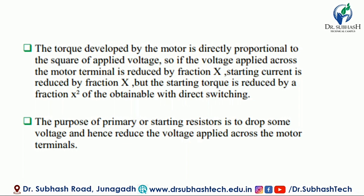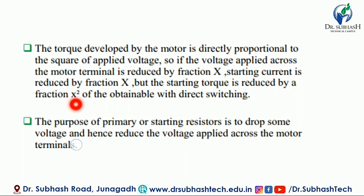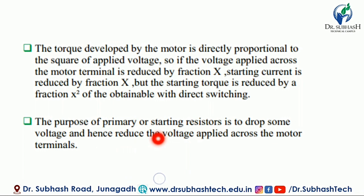If the applied voltage across the motor terminal is reduced by fraction X, the starting torque is reduced by the fraction X squared. So the starting torque obtained with direct switching is reduced accordingly, and direct switching is possible.